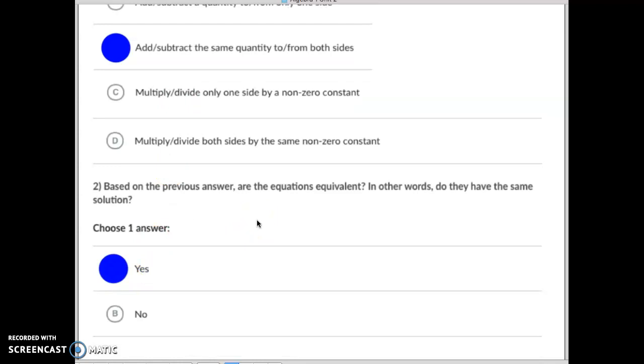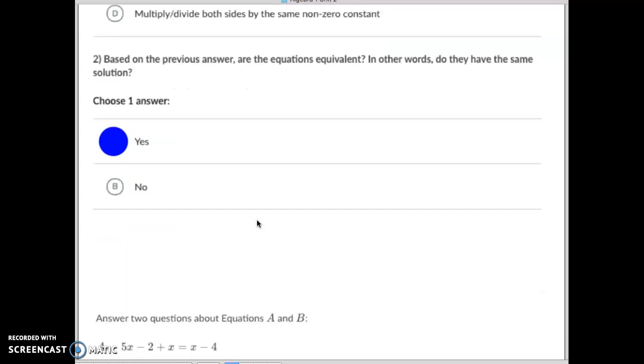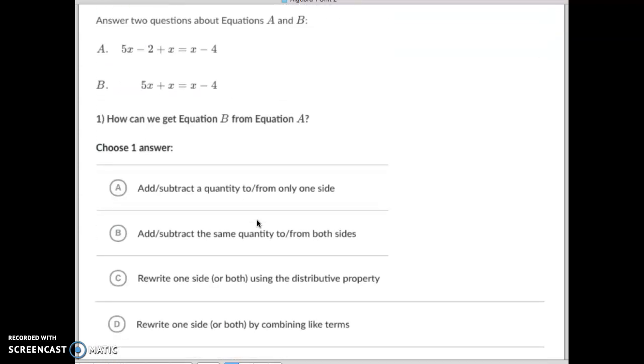If it wasn't something they did correct, then you would say no. So let's take a look at option number two here, question number two. In this one, take a moment to look, what did they do to get from equation A to equation B?